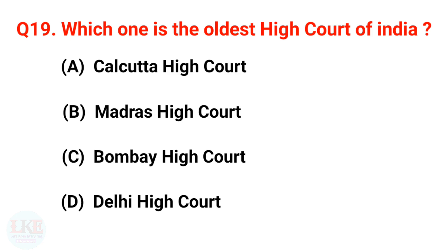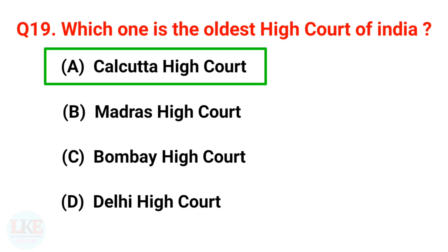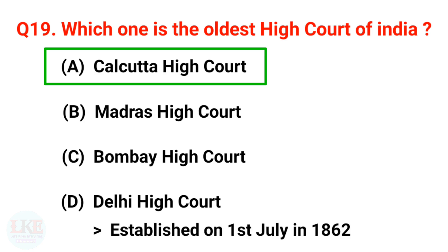Next question: Which is the oldest High Court of India? Options: A) Calcutta High Court, B) Madras High Court, C) Bombay High Court, D) Delhi High Court. The right answer is option A, Calcutta High Court, which was established on 1st July 1862.